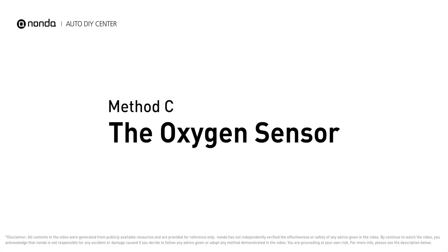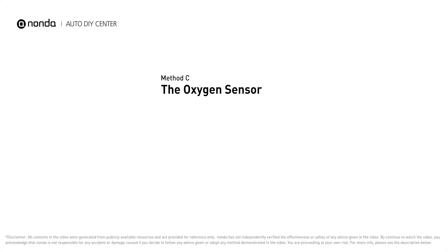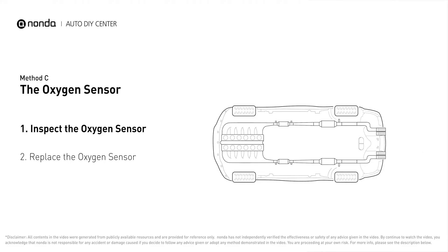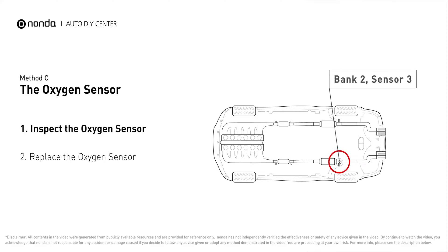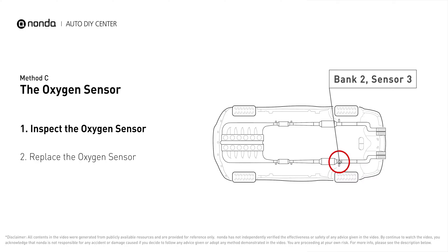Method C: the oxygen sensor. This oxygen sensor is located right after the catalytic converter. Bank 2 is on the side with cylinder number 2, and sensor number 3 is downstream of the last catalyst in the exhaust system.